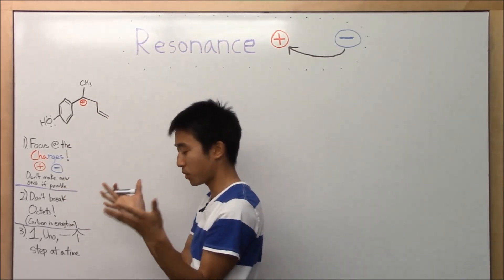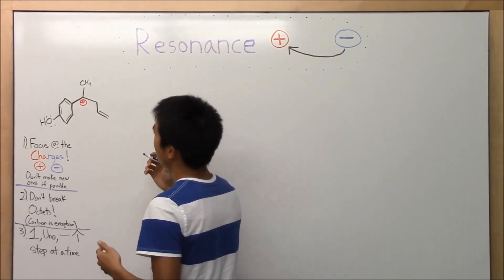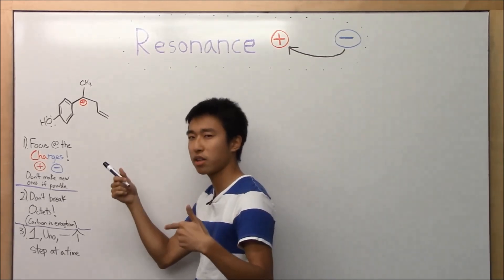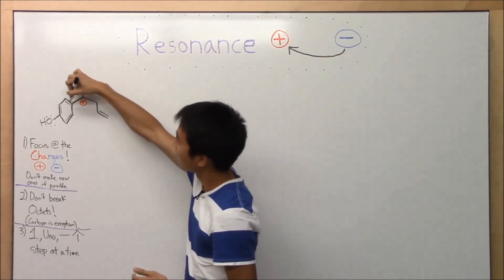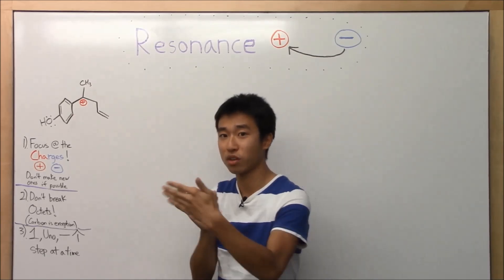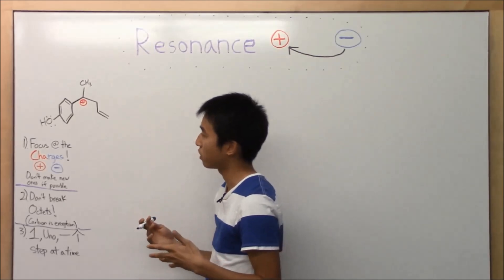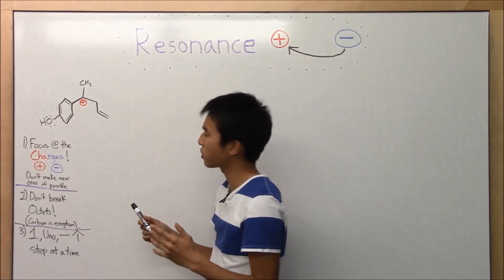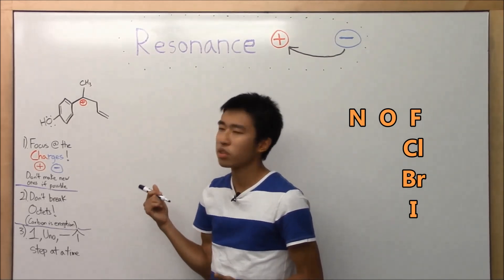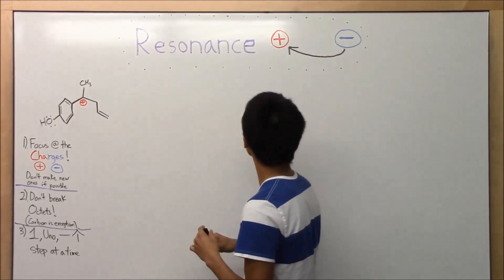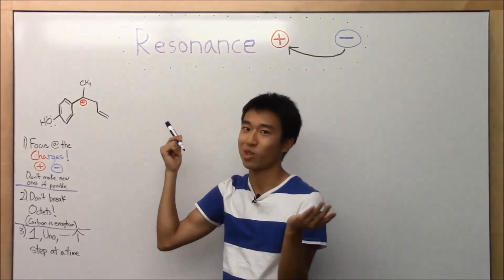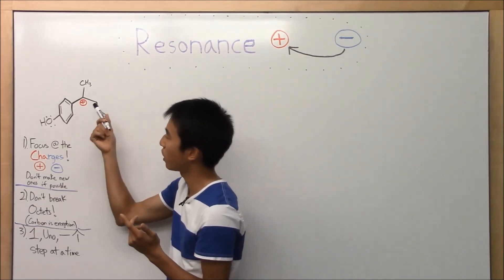We've got a positive charge here — it's an empty space with no electrons. How do we fill in that gap? Well, you have to think about what you can move. You can move pi bonds — the other bond in double bonds. This is a pi bond, that's a pi bond — pi bonds are electrons that are mobile, they can move. The only other source of electrons are lone pairs, which will almost always come from oxygen, halogens like fluorine, bromine, chlorine, or nitrogen. Carbon usually doesn't have a lone pair. In this case, there's no negative charge, so instead we try to move pi bonds and lone pairs to fix that positive charge.